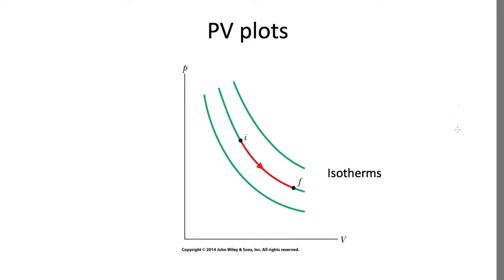Now, in the previous question, we used a PV plot. PV plots are used a lot in thermal physics. And they're just a graph with pressure along the y-axis and volume along the x-axis.